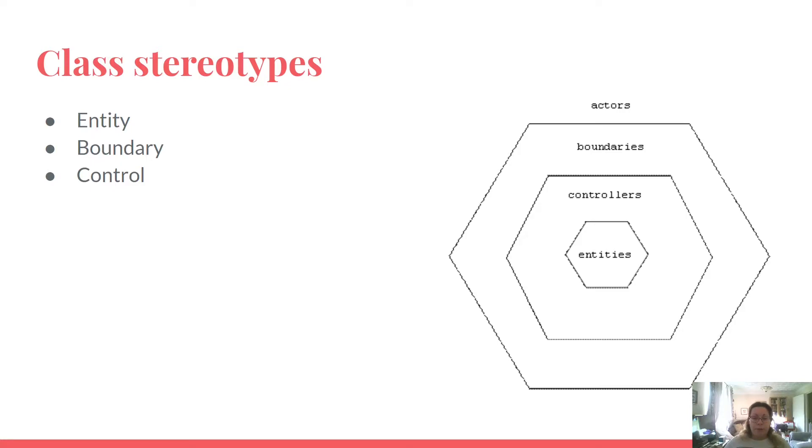Stereotypes can be added to attributes, operations, and relationships, and they can have attributes to store additional information. A stereotype is placed before or above the element name and is enclosed in guillemets.